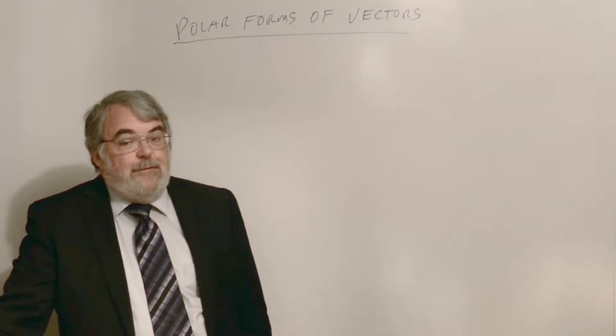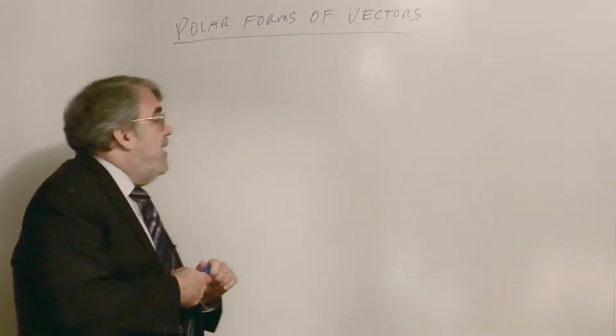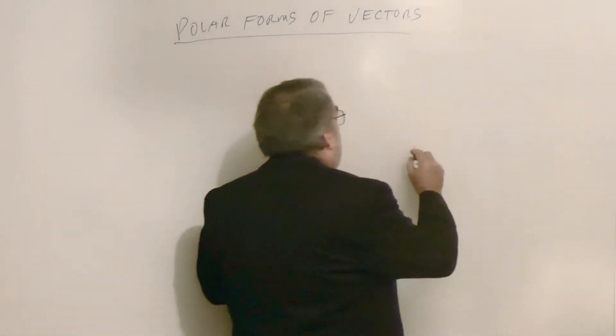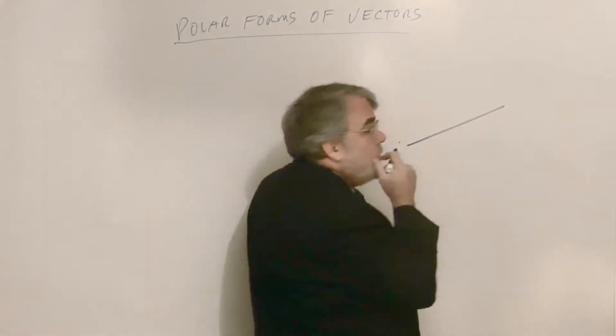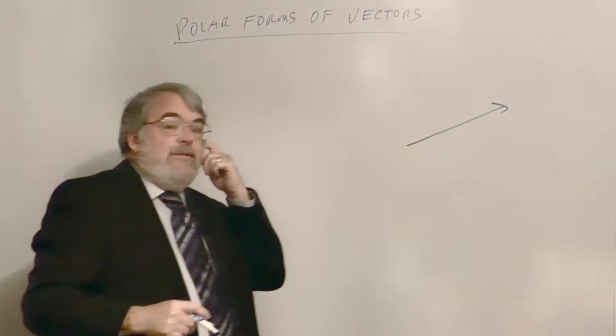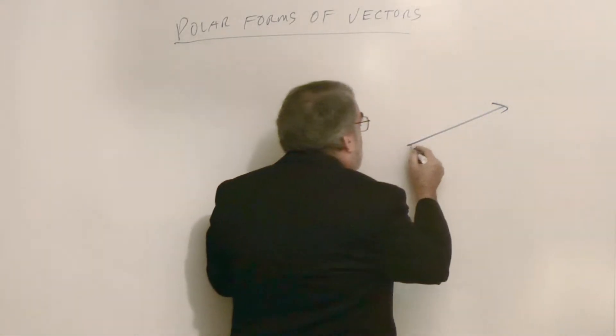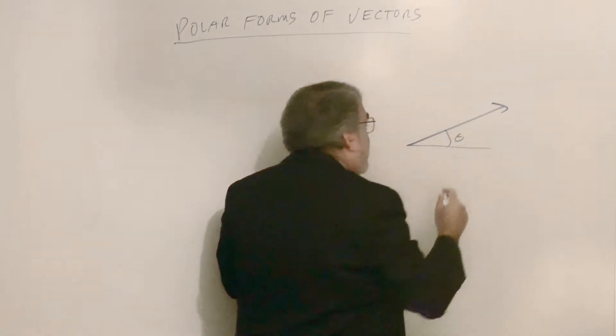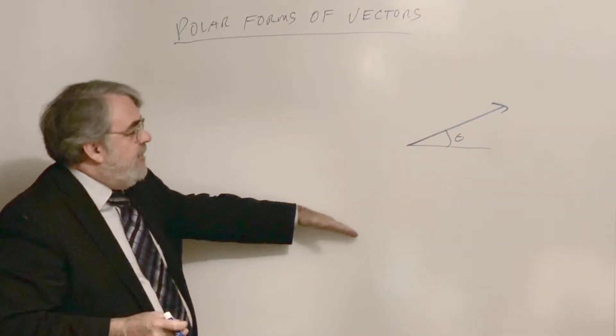Vectors can have a polar form to them, and it's quite natural because if you have a line segment that has a length and the arrow indicates an angle that we could orient from the x-axis, positive x-axis, rotated.